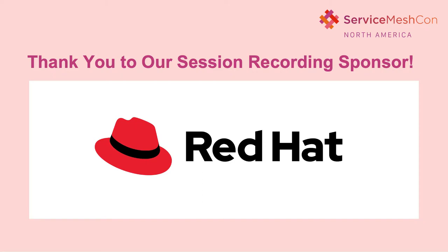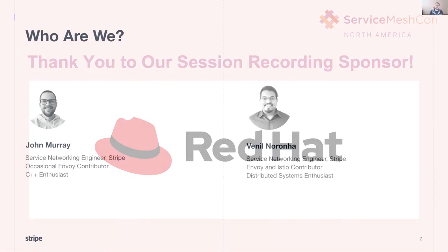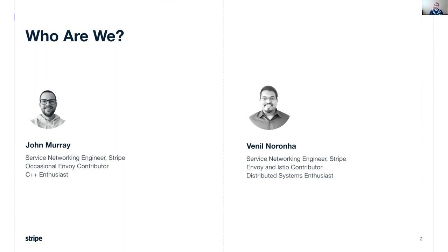A little bit about your presenters today. My name is John Murray. I am an engineer on the service networking team at Stripe, building our internal service mesh. I am an occasional Envoy contributor when the need arises, and outside of work, I am a C++ enthusiast.